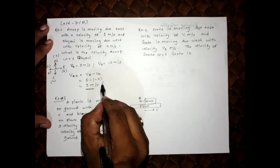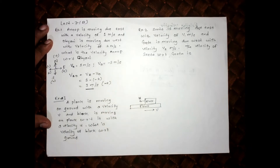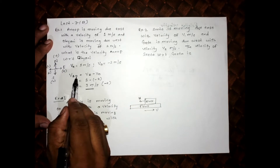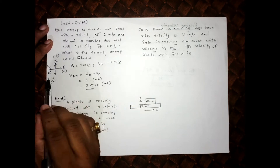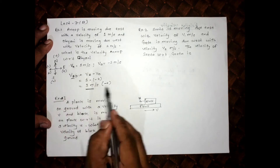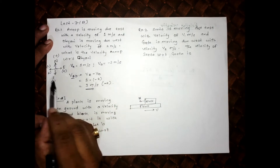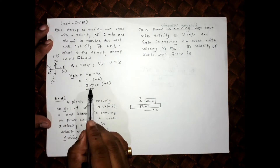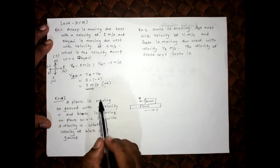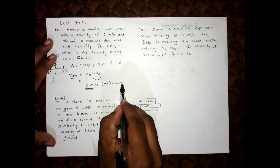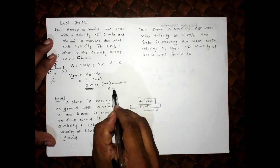The answer is positive 3, meaning from Dhyani's perspective, Anoop appears to be moving east. Dhyani observes that Anoop is going towards the east at a speed of 3 meter per second. It is towards east — clear.